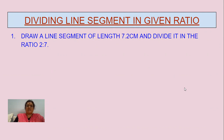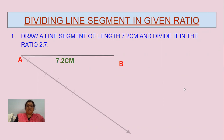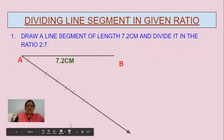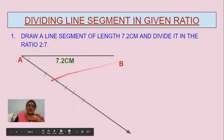First, what we have done: we have taken a line segment of 7.2 centimeters and drawn a ray AX such that angle BAX is an acute angle. We have marked nine equal line segments on this ray. We have taken nine because when you add seven plus two, that equals nine.